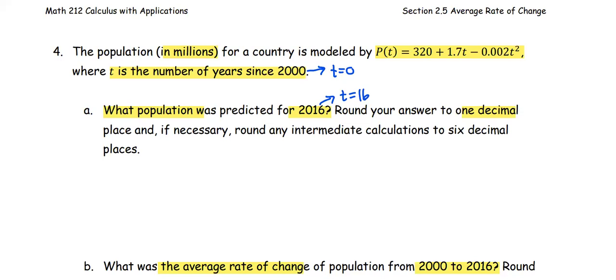We are going to predict at t=16, or compute the function value at 16. We press 16 into the t in the equation, in the function. So P(16) is 320 + 1.7×16 - 0.002×16². After we put it in the calculator,